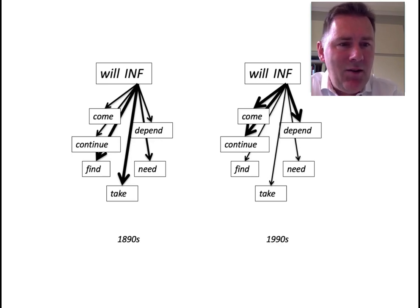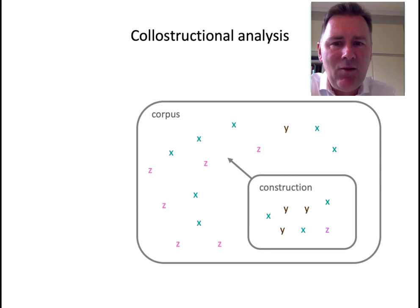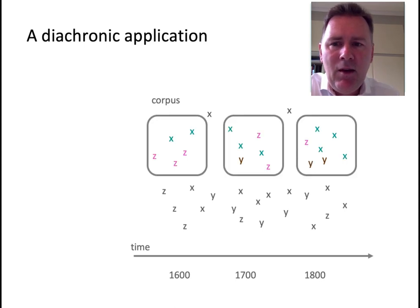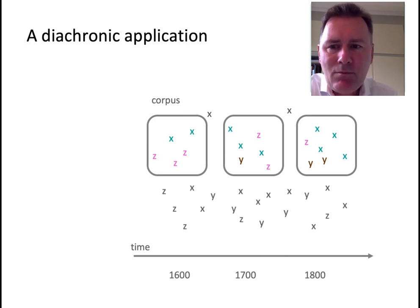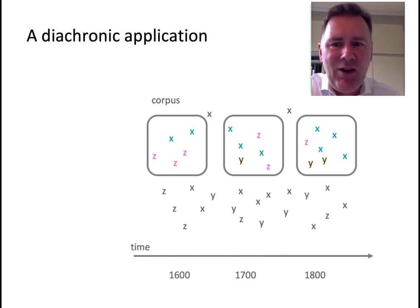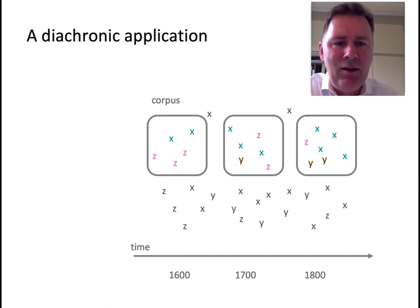The overall logic of collostructional analysis can be exploited for diachronic purposes. Instead of a design that compares observed and expected frequencies across a construction and a corpus, we can use a diachronic corpus holding data from different historical periods and retrieve examples of the same construction from different periods of time. We can then investigate whether some elements are over-represented in one period and under-represented in another, and tracking these changes allows us to say something about semantic change and even grammaticalization.